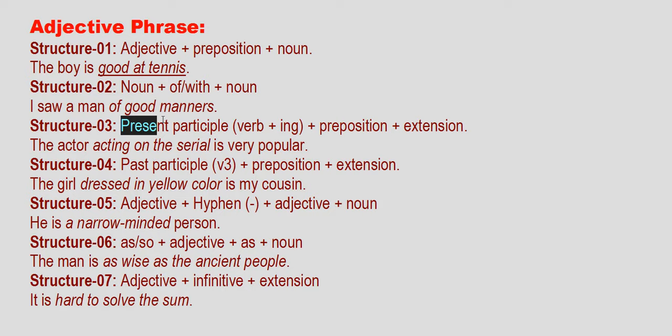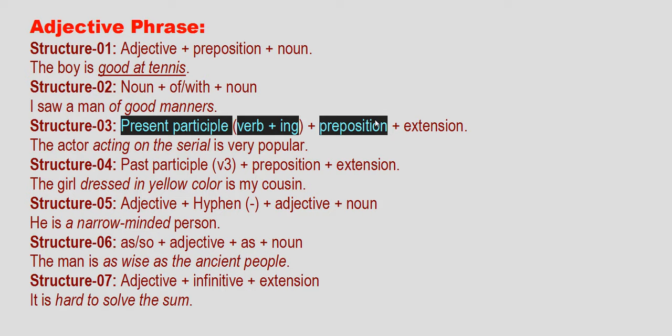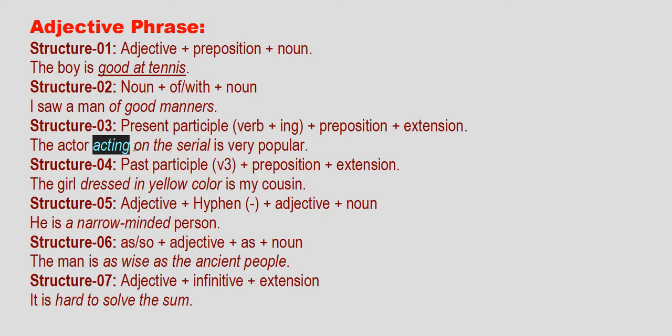The present participle — the actor acting on the serial — the film is very popular. This is a present participle. The present participle: 'the actor acting on the serial' — adjective phrase uses a present participle. Adjective as well as the phrase is fresh — this phrase uses a word coming from the present participle.